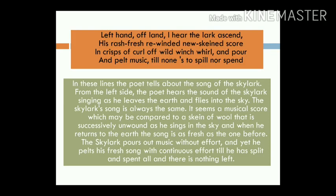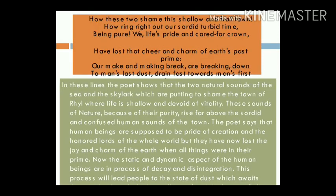In the next four lines, the poet tells about the song of the Skylark. From the left side, the poet hears the sound of the Skylark singing as he leaves the earth and flies into the sky. The Skylark's song is always the same. It seems a musical score which may be compared to a skein of wool that is successively unwound as he sings in the sky. And when he returns to the earth, the song is as fresh as the one before. The Skylark pours out music without effort, and yet he expends his fresh song with continuous effort till he has spent all and there is nothing left.